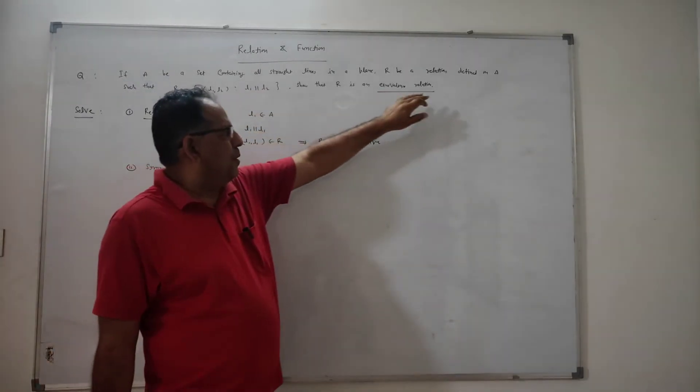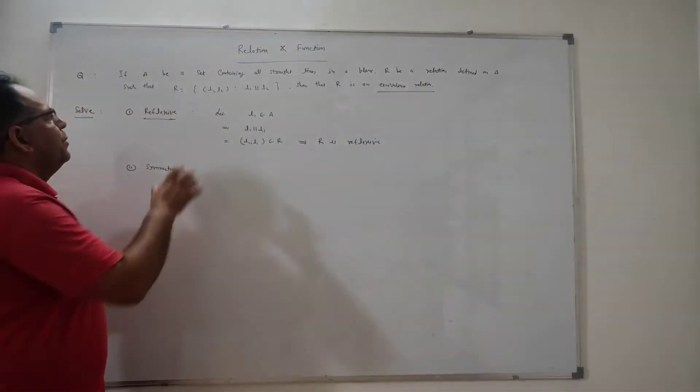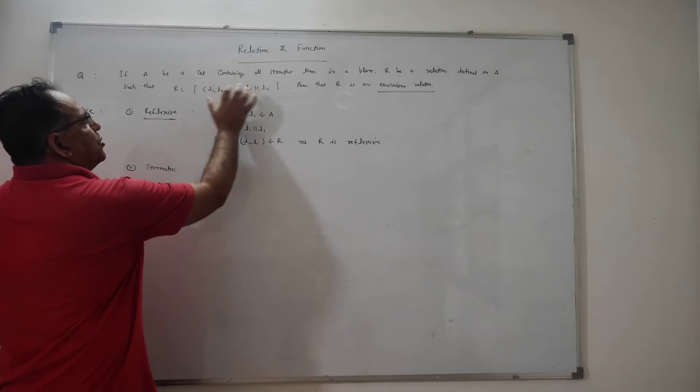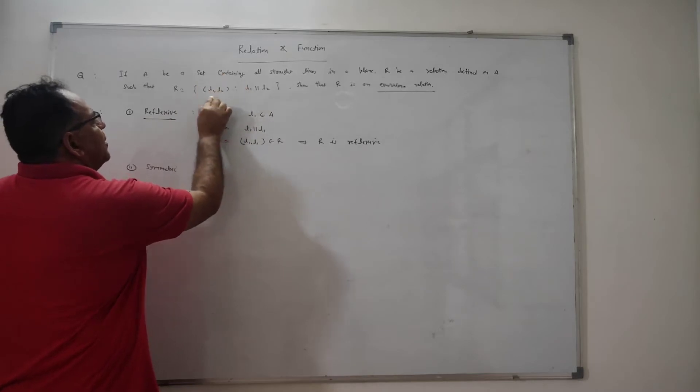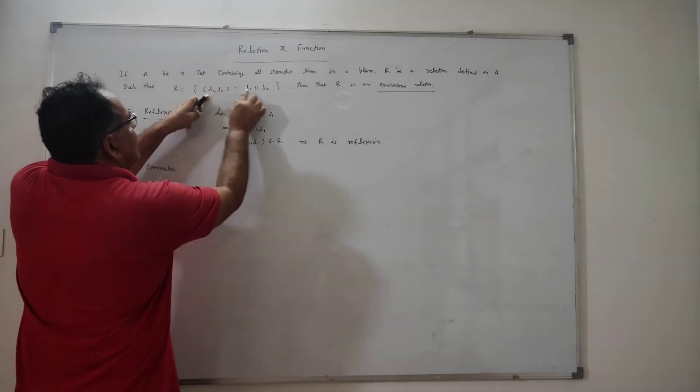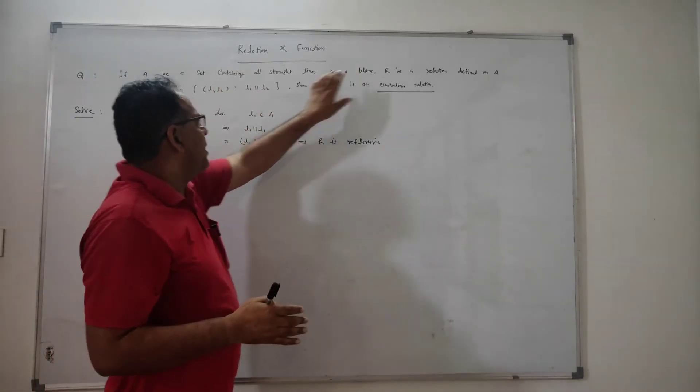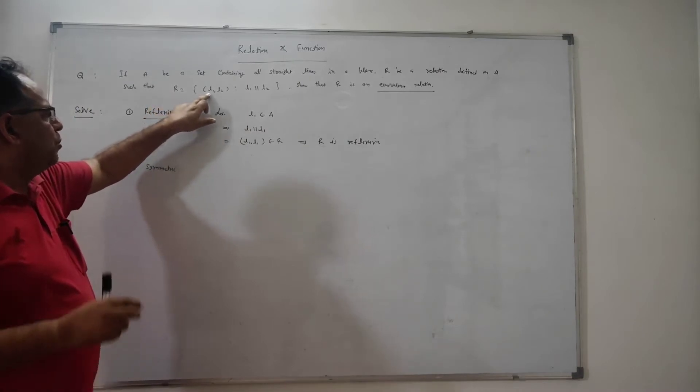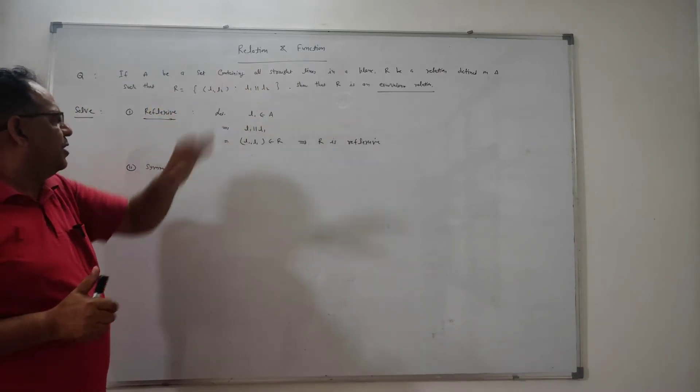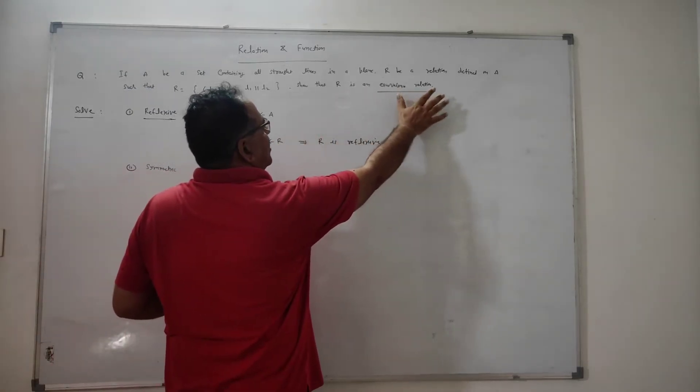Show that R is an equivalence relation. First, let's discuss what the question is saying. R is the relation containing ordered pairs in such a way whose elements are perpendicular to each other. That means in all lines, we are taking all the pairs in R in which both elements are perpendicular to each other. So we are saying that R is an equivalence relation.